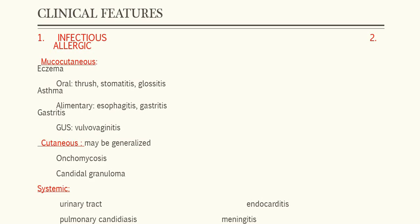Cutaneous may be generalized, onychomycosis, or Candida granuloma. The third is systemic, which may include urinary tract infection, pulmonary candidiasis, endocarditis, and meningitis.